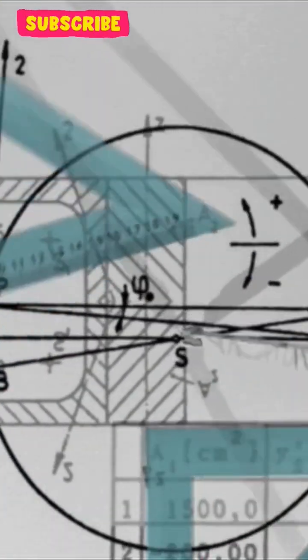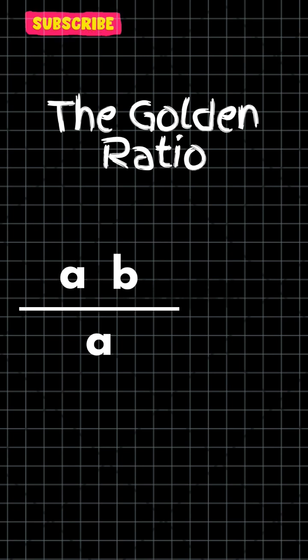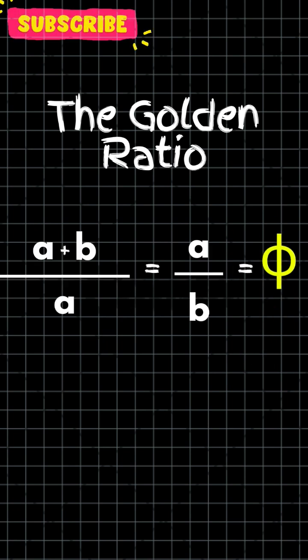Mathematically, this can be expressed as a plus b upon a, which is equal to a upon b, which is ultimately equal to phi.